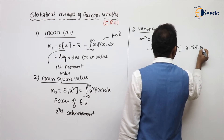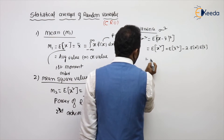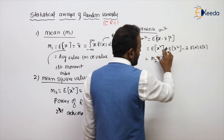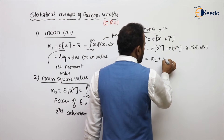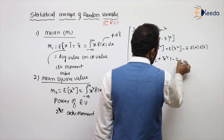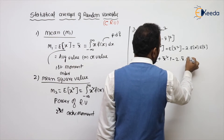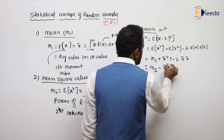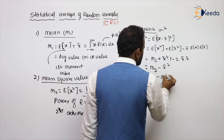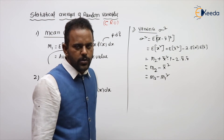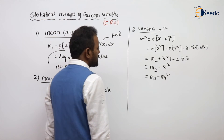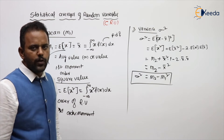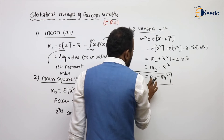Taking expectations: E of x squared is called m2. The term x-bar squared comes outside because x-bar, the mean, is a constant. E of x itself is x-bar, which also comes outside, so that term becomes 2 times x-bar squared. Finally, variance simplifies to m2 minus m1 squared, where x-bar is m1.